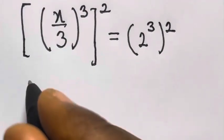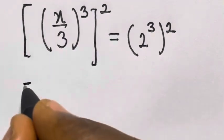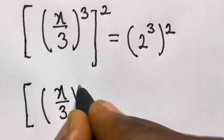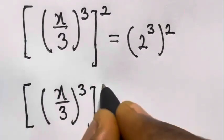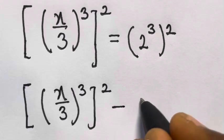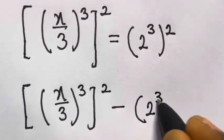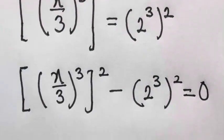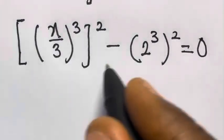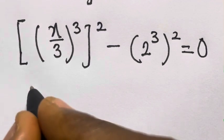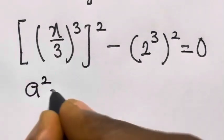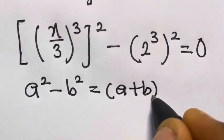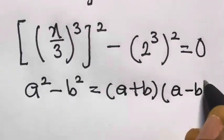It becomes x divided by 3, raised to the power 3, squared, minus 2 raised to the power 3, squared, equals 0. Remember when we have difference of two squares, such as a squared minus b squared, this equals a plus b multiplied by a minus b.